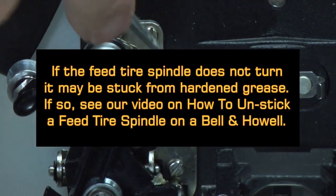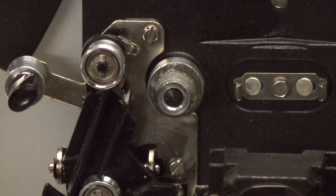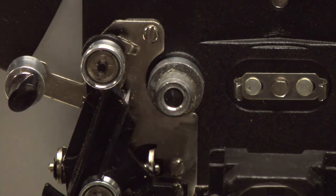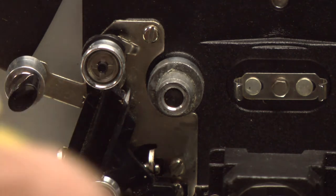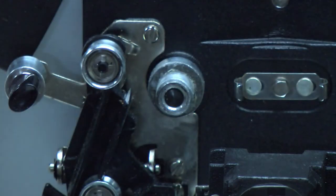Okay, we used mineral spirits and some VM&P naphtha thinner to wipe on this spindle here, on the feed tire spindle, and clean it up. It's pretty clean now. All of the gooey rubber is off, so the only thing we'll have to do is basically slide on a new tire.